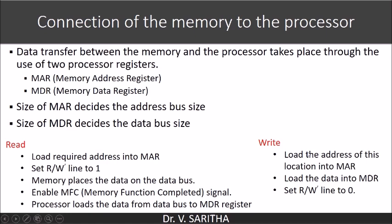In the case of a write operation: load the address of the location into MAR — the address into which you want to save the data. The data you want to store in memory is loaded into MDR. Then set the RW line to 0. When the RW line is 1, a read operation is performed; when it is 0, a write operation is performed.